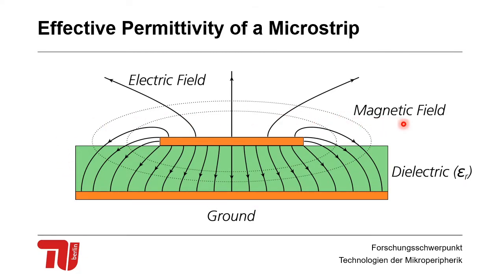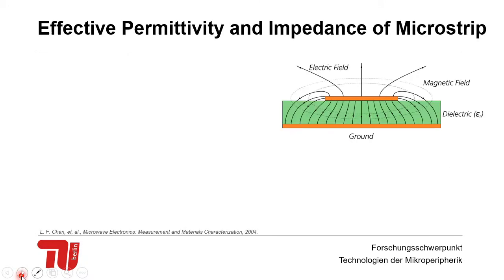Now what we can do is we can calculate the permittivity and the impedance because the permittivity is not the actual permittivity of this dielectric here. It will have the permittivity epsilon r as we know, but the thing is that here you see the electric field is not just in the dielectric but also in air to a significant portion so we have to account for that.